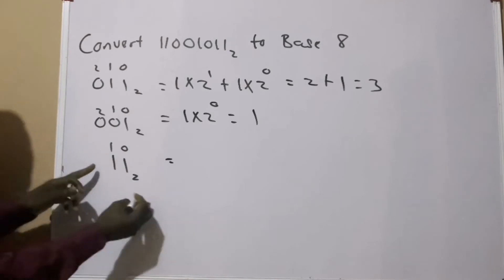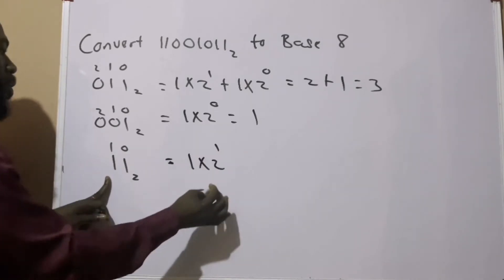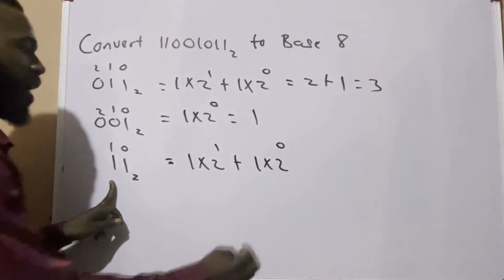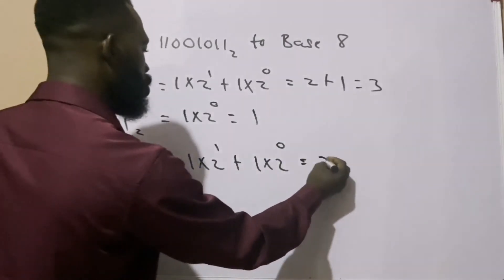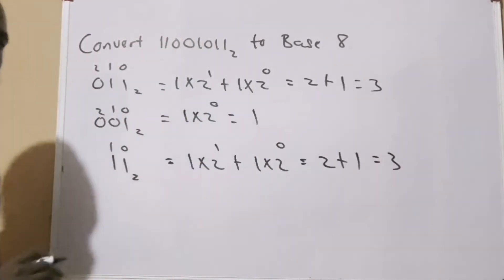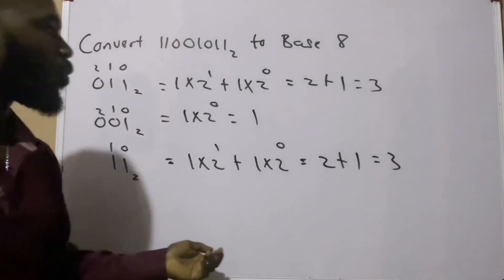And then lastly here becomes 1 times 2¹ plus 1 times 2⁰, and this will also give us 2 plus 1, which gives us 3.